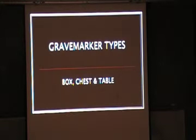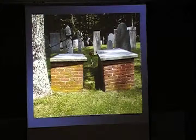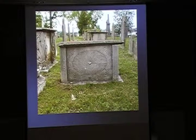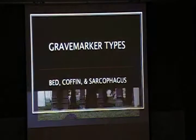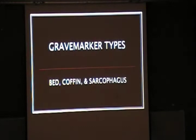The next category is box, chest, and table. You see a lot of these in this area — they're boxes. Here's one that's more elaborate, from the cemetery in Columbia, Tennessee that I showed earlier. And then these are tables because they look like tables.